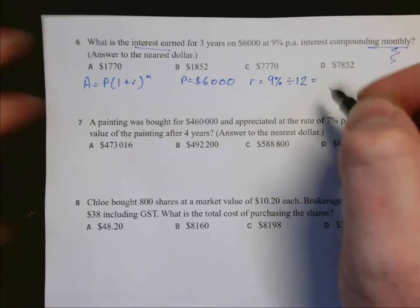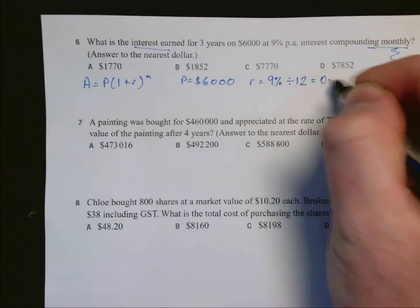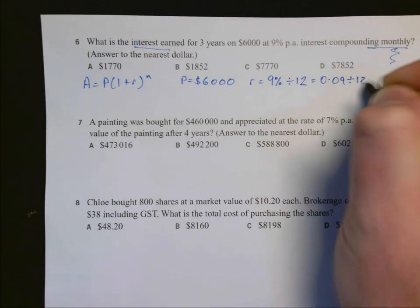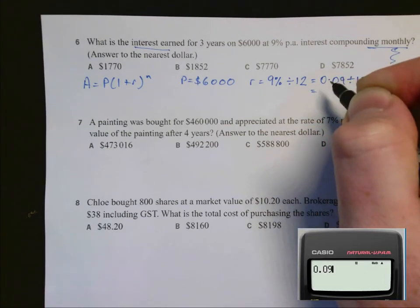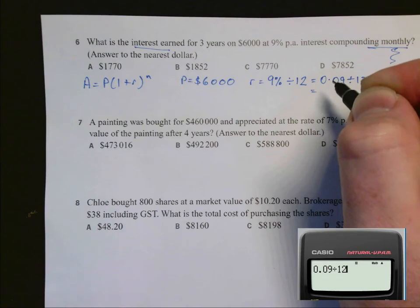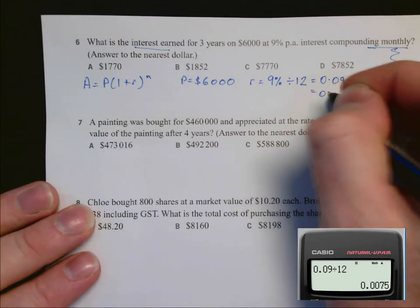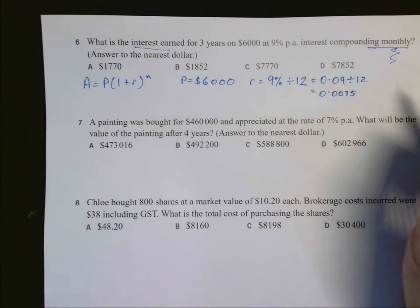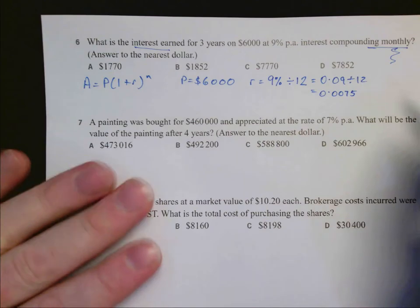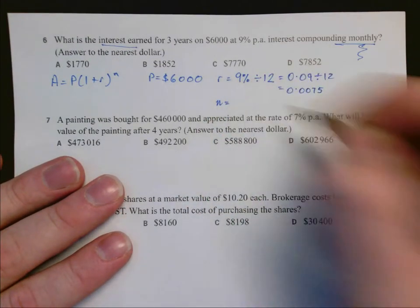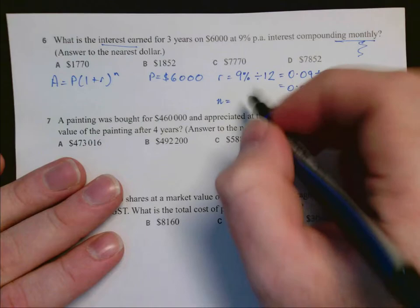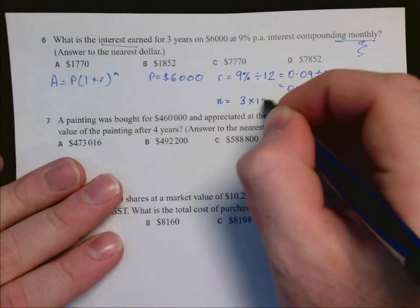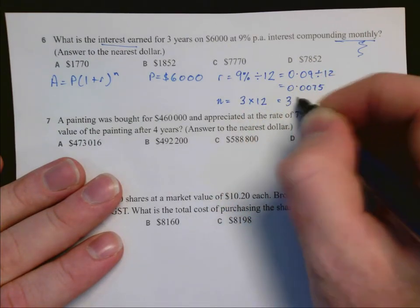We can do that on our calculator as 0.09 divided by 12, and we find the answer is 0.0075. We also have N. N is currently three years, but we want it monthly, so we need three lots of 12 months, which is 36.